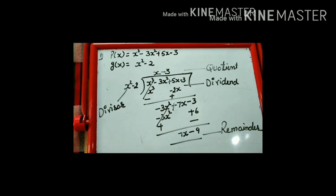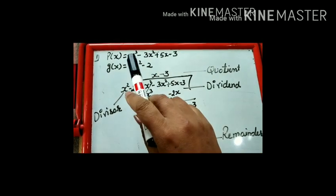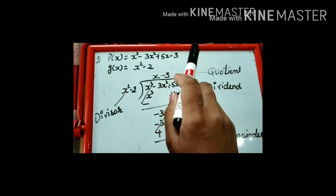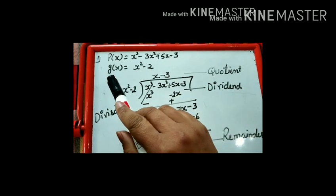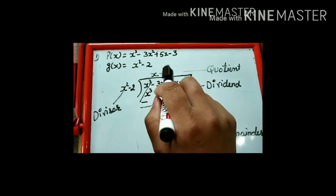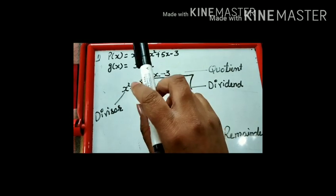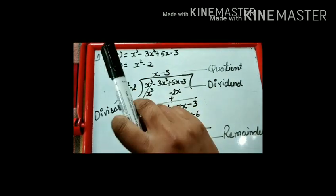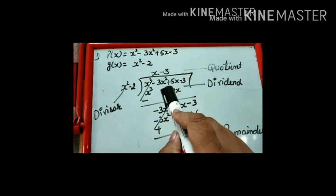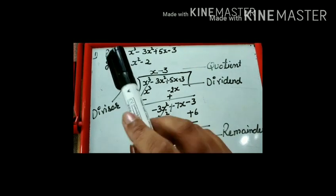Let us take an example. P(x) which we have taken is x³ - 3x² + 5x - 3, and g(x) which we have taken is x² - 2. This is our first question from the exercise. P(x) is our dividend and g(x) is our divisor.